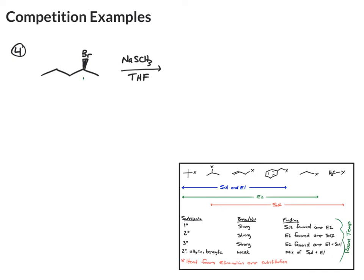Here we have a secondary bromide, and this time that is at a chiral center, so we'll pay special attention to that. Secondary halides can undergo any of the four mechanisms, SN1, SN2, E1, and E2.